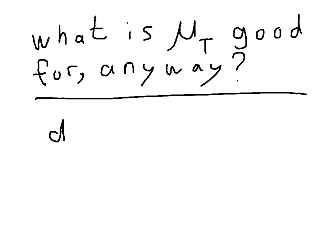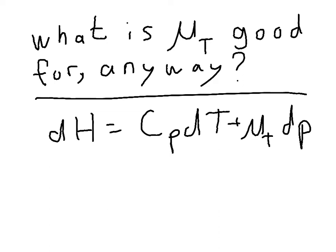So we know that dH is equal to cP dT plus mu T dP. So imagine that we're changing the pressure on a compound and we're not changing the temperature. Well, if we're not changing the temperature, then this term goes away and we can say dH is equal to mu T dP.